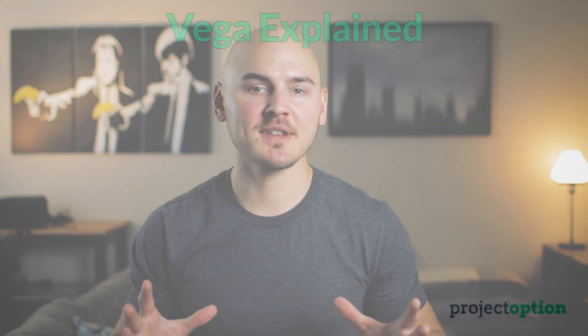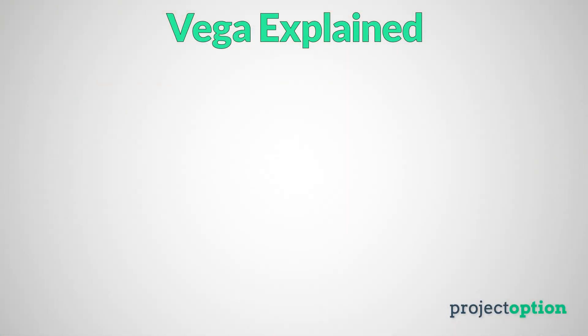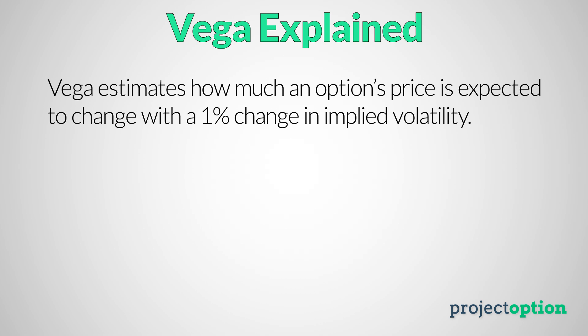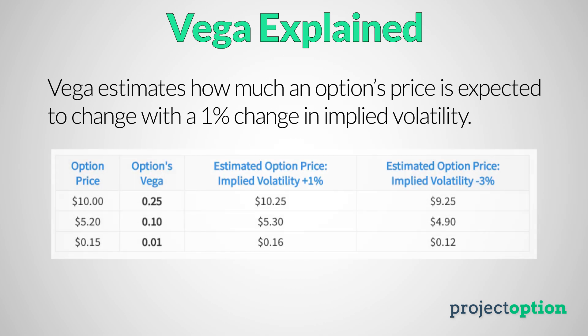And because of that, the option prices will increase in value based on that increased demand and with it, implied volatility will also increase. Vega, one of the primary option Greeks, estimates how much an option's value is expected to change with a 1% change in implied volatility. Let's look at a table so I can demonstrate exactly what I mean by this.